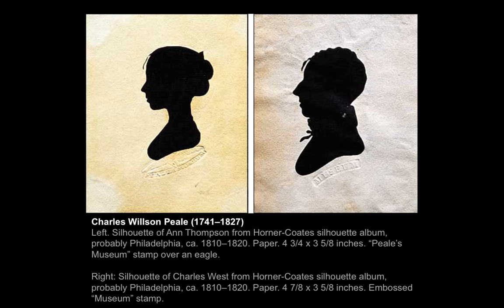Silhouettes were common in the 18th century. You see examples here from Charles Wilson Peale, a Philadelphia artist, naturalist, scientist, and politician. Peale was a successful artist living in Philadelphia, and he set up one of the very first museums in this country.